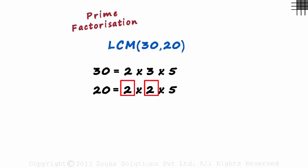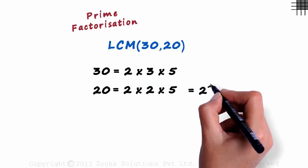Since there are two 2's here, we can write this as 2 squared multiplied by 5.